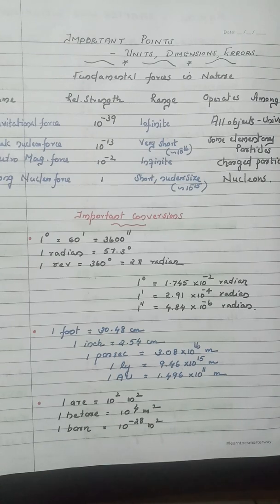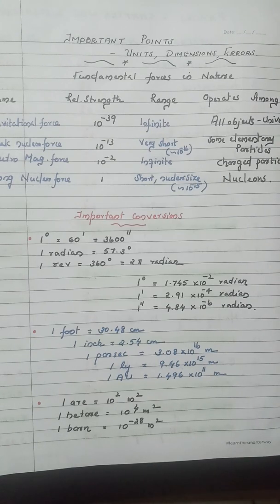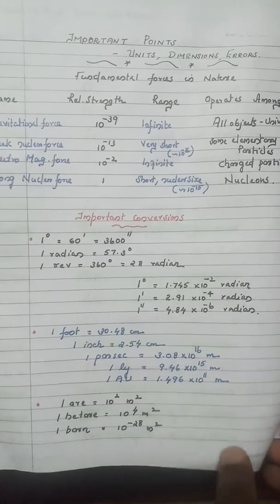For units of area: one are equals 10² meter square, one hectare equals 10⁴ meter square. One barn is a very important unit to measure nuclear areas, equal to 10⁻²⁸ meter square.